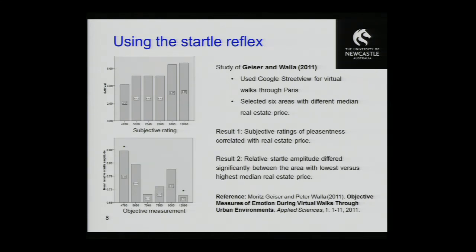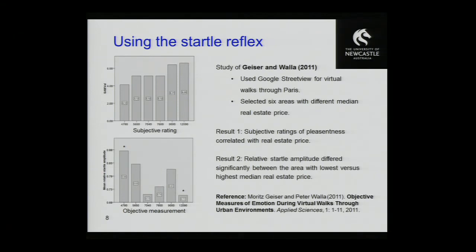They selected six areas of urban spaces with different median real estate prices, increasing from 4,780 to 12,090 euro per square meter, and used about 20 volunteers to perform virtual walkthroughs of these areas on a computer. They measured the startle reflexes with breaks of at least 40 seconds. The general result was that subjective ratings were correlated with real estate price, and the cheapest area resulted in a significantly different startle response than the most expensive area — giving us an objective measure of emotion and a positive answer to whether there is a link between visual architecture and body reactions.